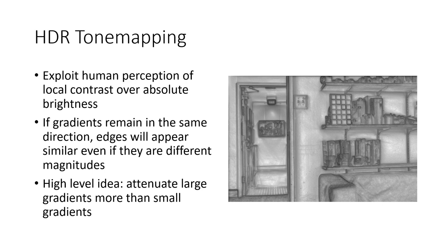Moving on from that failure, I decided to try re-implementing a paper on tone mapping an HDR image in the gradient domain. Again, this is basically to exploit our perceptual bias for local changes and contrasts being more important than absolute brightness. The key insight is that the direction of the gradient plays a much greater role in the final image than the absolute magnitude, and the high-level idea is that if we attenuate the large gradients much more strongly than the small gradients, as long as they're all facing the same direction with the same relative ordering of magnitudes, the output image will still make sense to us.